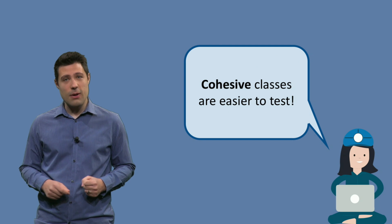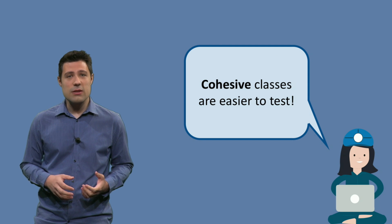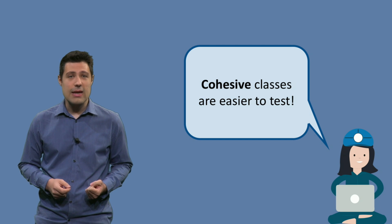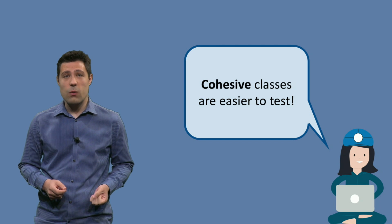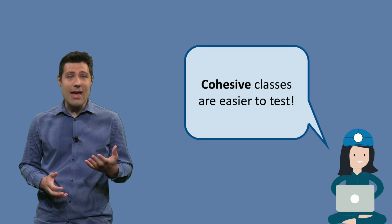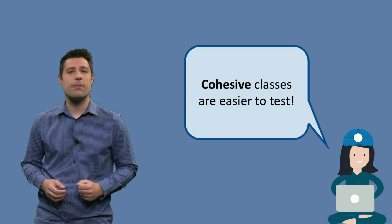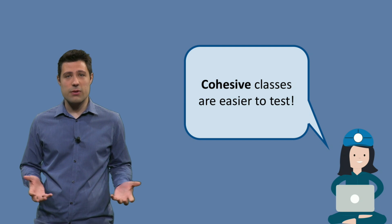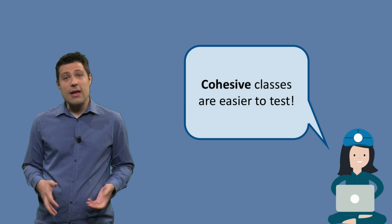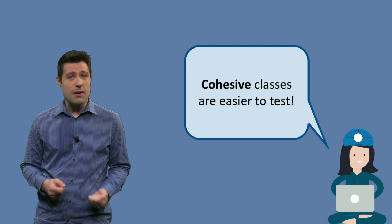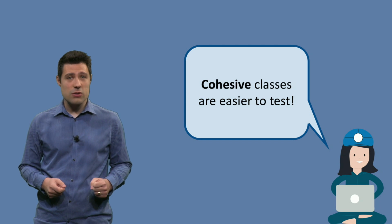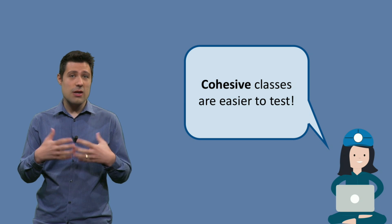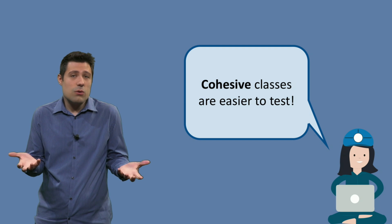The first tip is about cohesion. A class is cohesive when it does just one thing — it has one single responsibility. In the SOLID nomenclature, the S stands for Single Responsibility Principle. Cohesive classes require less testing effort. Usually classes are not cohesive because they do many things. In these cases, the suggestion is to break the class into many smaller classes that are easier to test because they do less things.